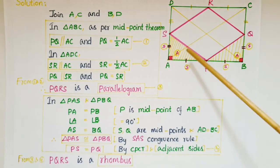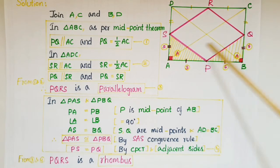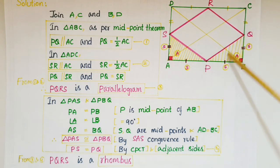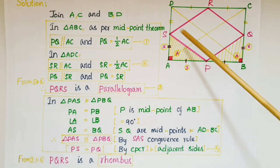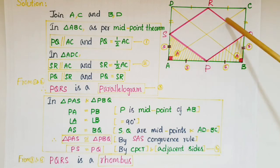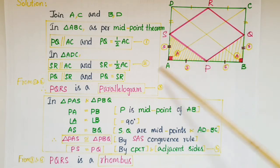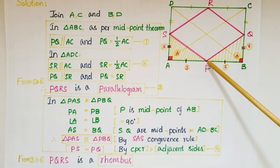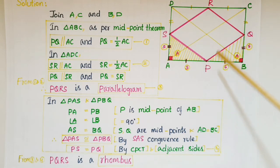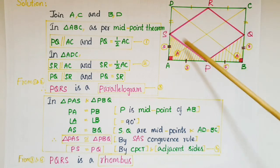So triangle PAS is congruent to triangle PBQ by the SAS congruence rule. Once these two triangles are congruent, we can equate the corresponding parts. PS is a side of one triangle and PQ is a side of the other, so PS equals PQ by CPCT. These are adjacent sides of the parallelogram PQRS, so PQRS is a parallelogram with adjacent sides equal — therefore PQRS is a rhombus.